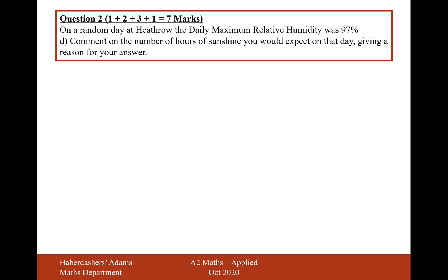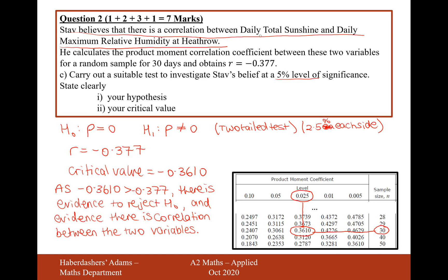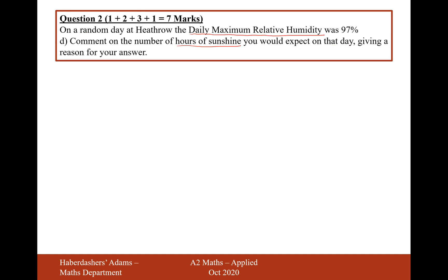Let's now move on to part D. On a random day at Heathrow, the daily maximum relative humidity was 97%, so quite a high amount of humidity. Comment on the number of hours of sunshine you would expect on that day, giving a reason for your answer. Well, given that these are the two variables that we've just shown that has a negative correlation, we've seen here in the previous question, daily total sunshine and daily maximum relative humidity is negatively correlated. So therefore, given that daily relative humidity is high, we would expect hours of sunshine to be lower than average.